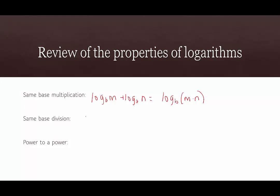For same base division, log base b of m minus log base b of n is equal to log base b of m divided by n. It's just a single logarithm, but the arguments form a fraction. A common mistake is writing log base b of m divided by log base b of n — that would be incorrect. This property just brings two logarithms with the same base together, and since it's subtraction, it turns the arguments into division.